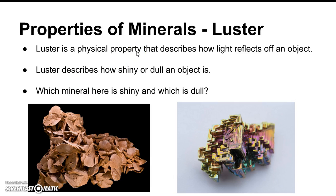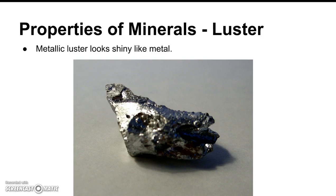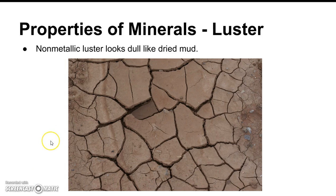The next property of minerals is luster. Luster is a physical property that describes how light reflects off an object — specifically how shiny or dull an object is. Look at number 11 on your video homework. Which mineral shown is shiny and which is dull? Metallic luster looks like shiny metal — that's number 12 on your video homework. Non-metallic luster looks dull, like dried mud — that's number 13 on your video homework.